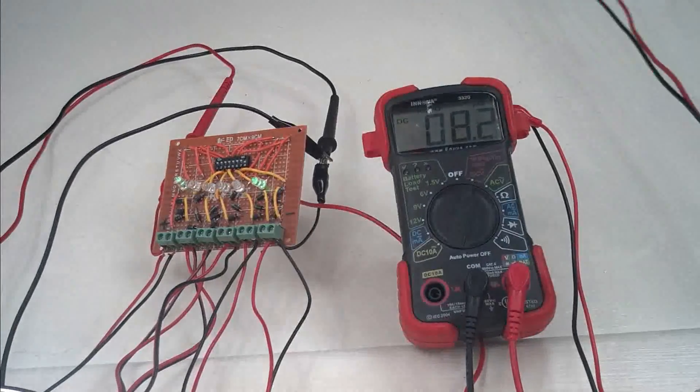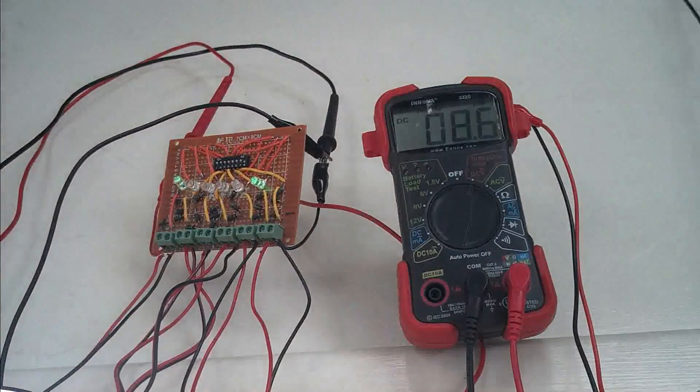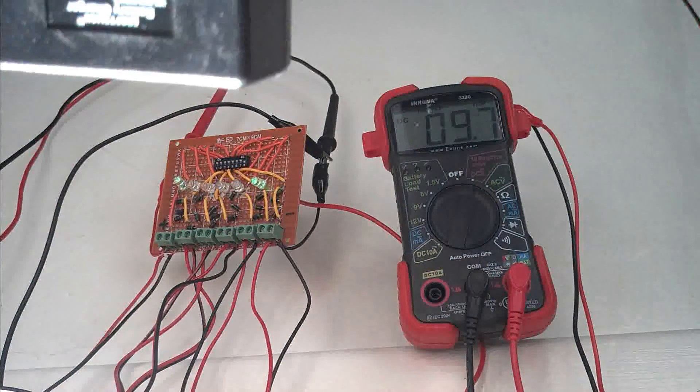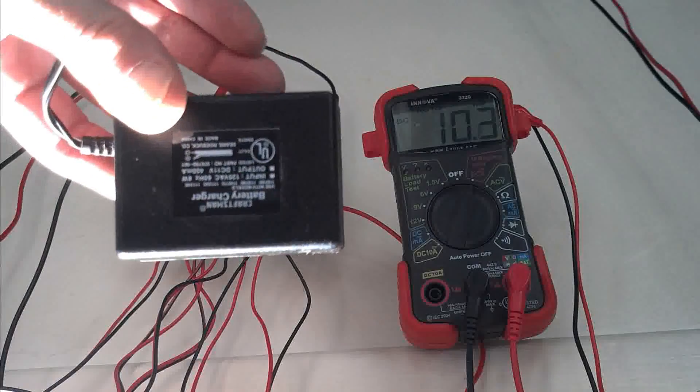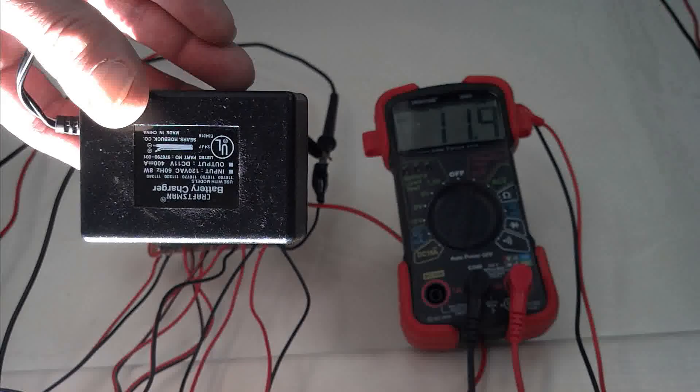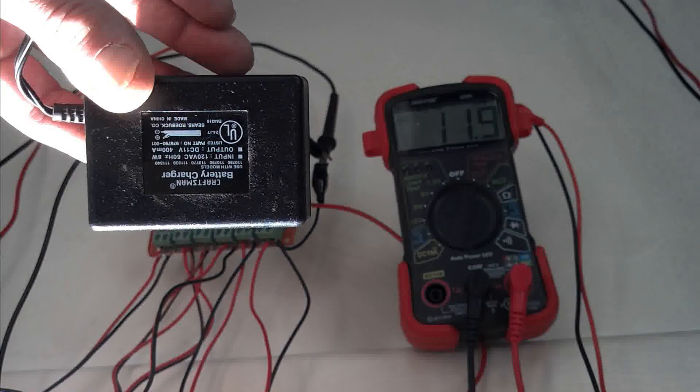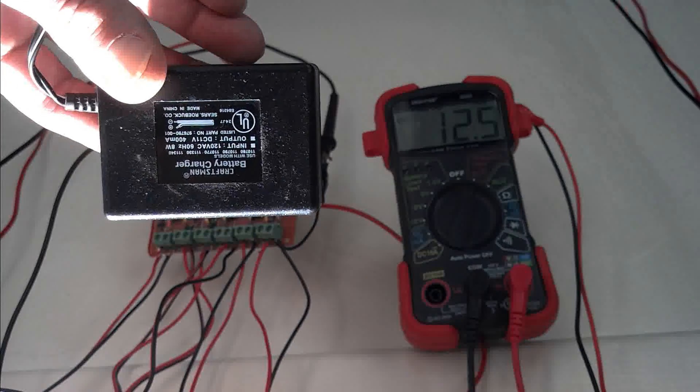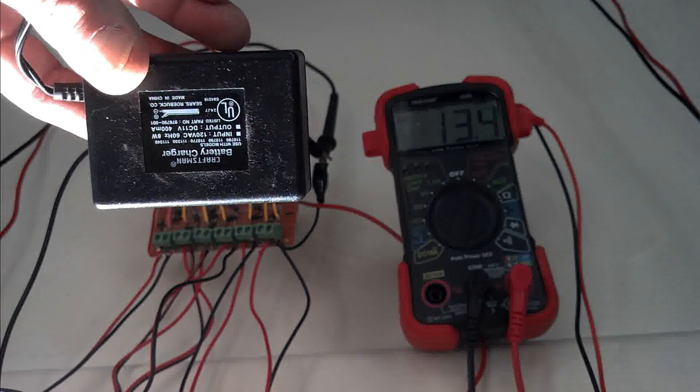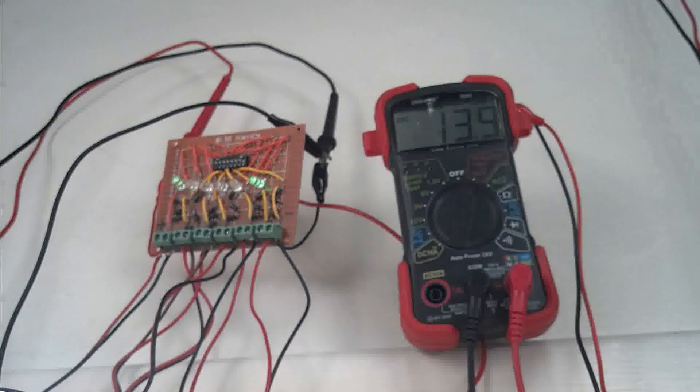To speed things up, sometimes I'll use something else. So I've got this old wall wart here. I don't know if you can see that there. Input 120 and the DC out is 11 volts, 400 milliamps. Let's see here. Let's go ahead and plug this in.